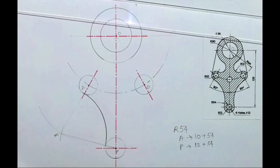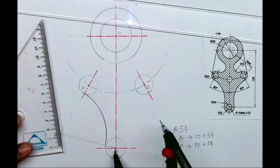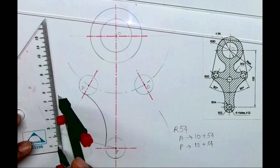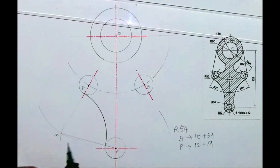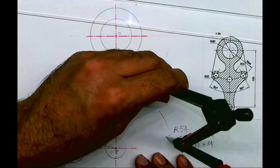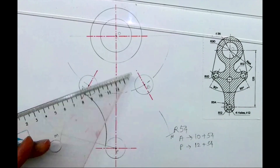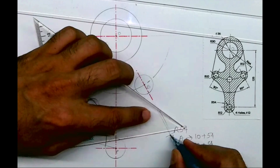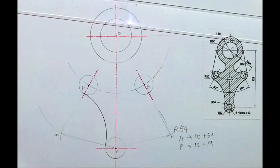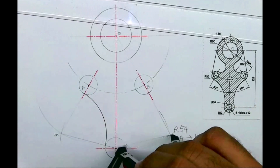The same we will do on the other side. You draw 66 from P and from B you cut 64. That gives point N, and from N you can draw radius 54. You can also join N to P and N to B to get the exact point, then draw the arc.